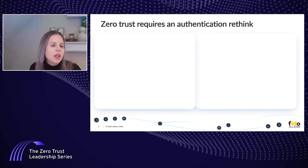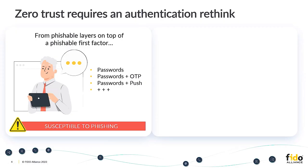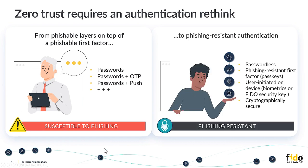I want to be clear about one thing: an MFA bypass attack can only happen and be successful when the password is already known — meaning that account has already been compromised, and then it's getting the additional factor. What do we learn from this? We have built layers upon layers over a phishable foundation, which is the password. At FIDO, we need to rethink this whole idea of strong authentication or multi-factor authentication if we're ever going to get to zero trust. We have to move away from having phishable layers on top of a phishable first factor.